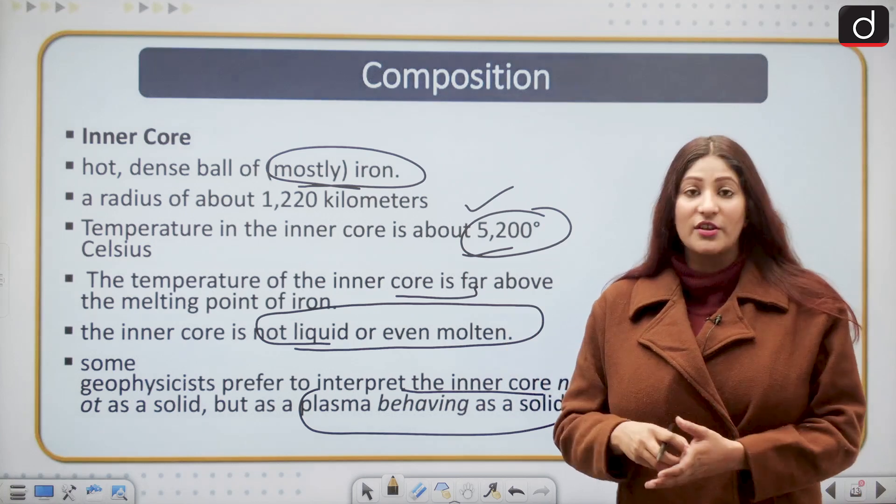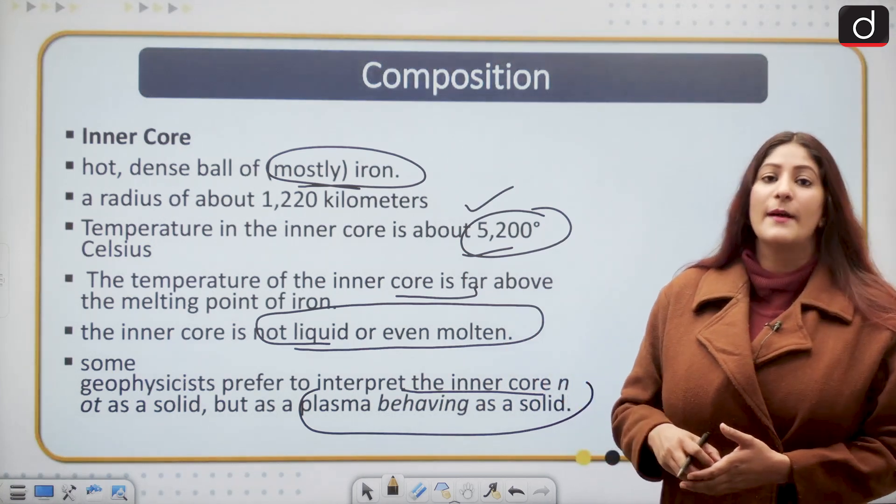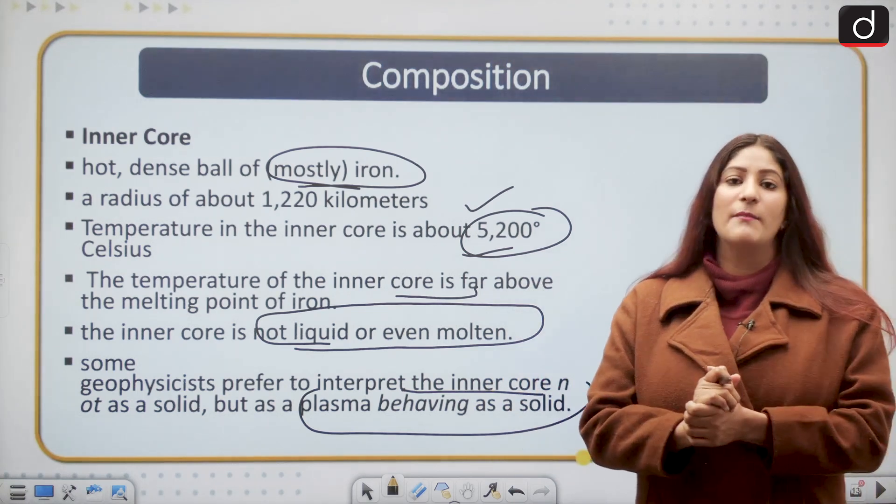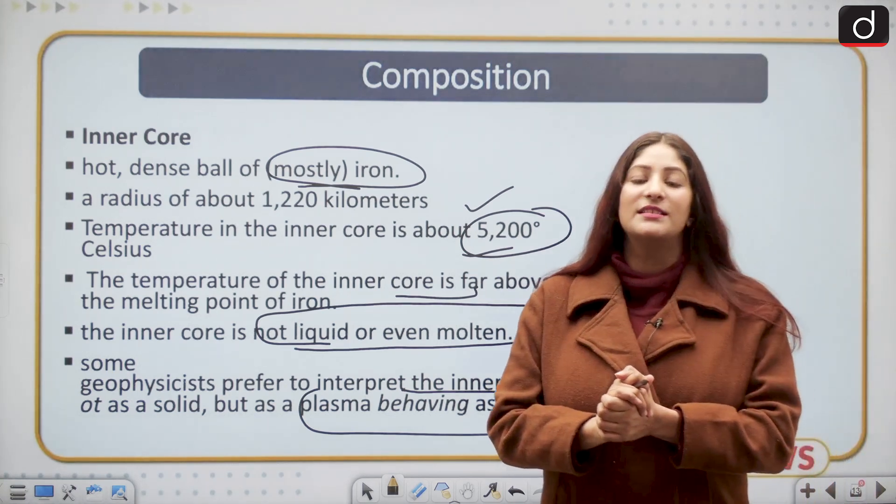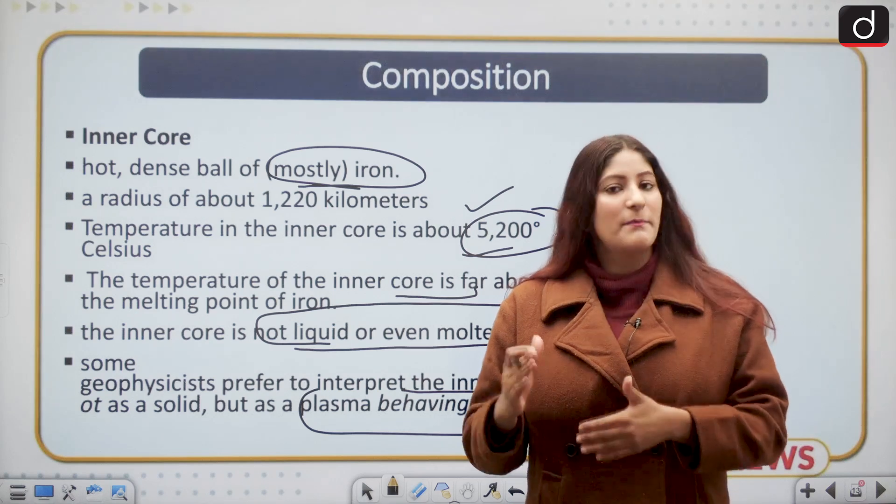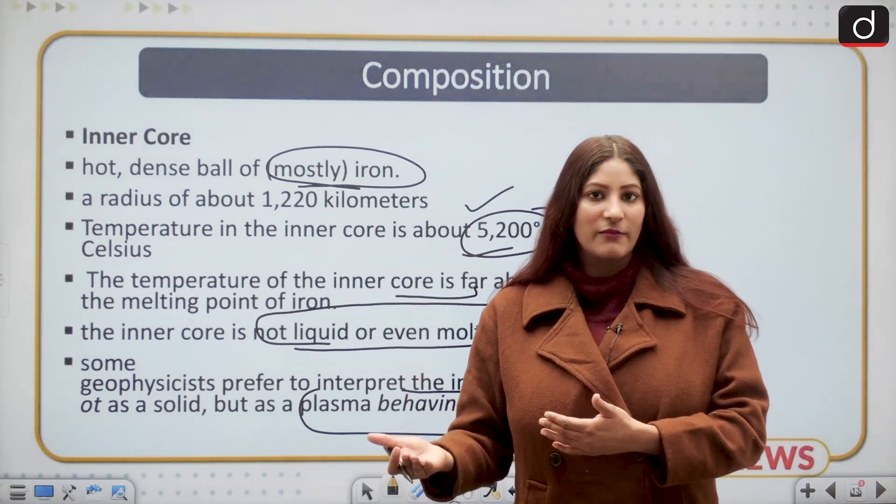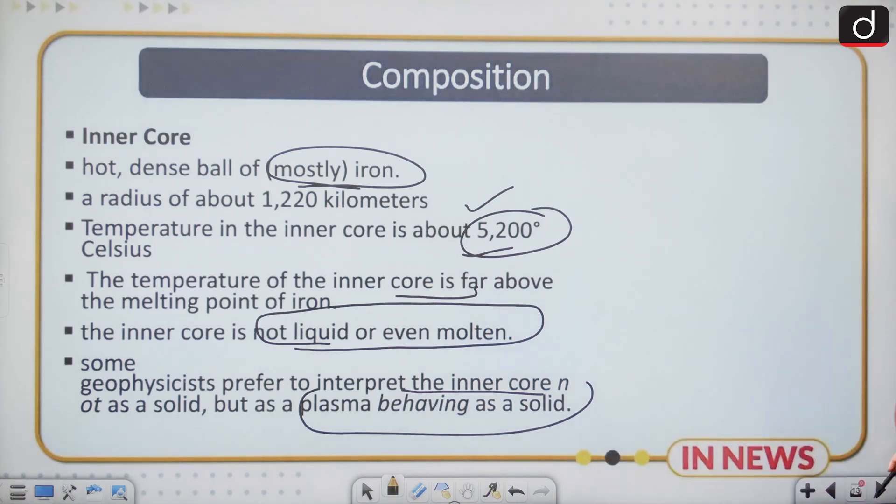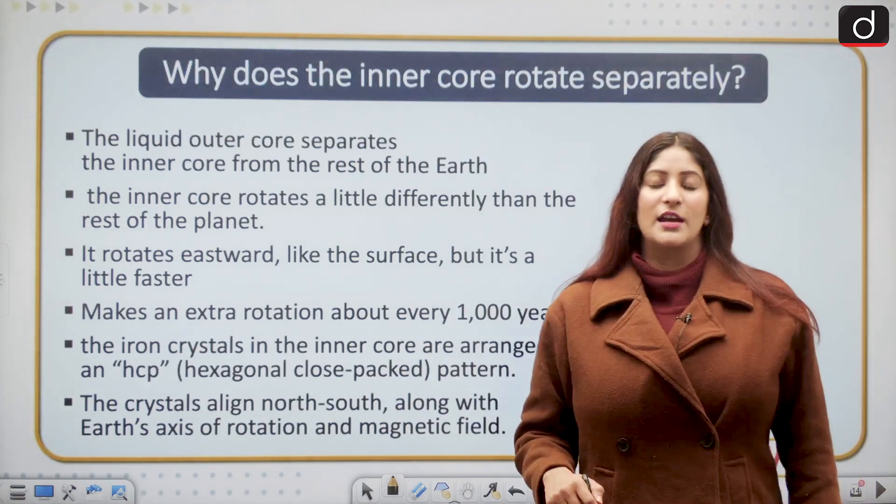Because of the pressure that is being created by the atmosphere on earth, it has held it like a solid ball. But geophysicists also say that it is a plasma, which is the fourth state of matter which behaves like a solid. But we do not have the proper equipment to know about it a lot.